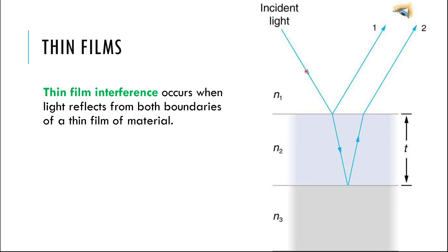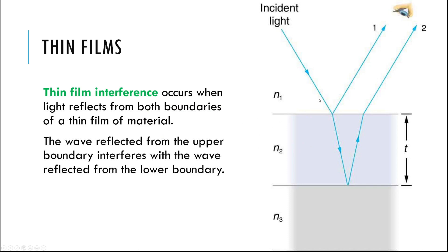In this situation, an incident beam of light comes in, some reflects at the top surface, and other energy refracts in, reflects off the bottom surface, and makes its way back out into the air. At the end of the day you have two beams — ray one and ray two — coming up out of the thin film. Ray two has traveled a further distance than ray one, so there's a path difference, which means we're going to get some interference.